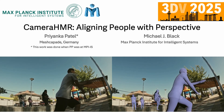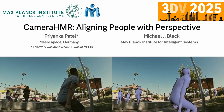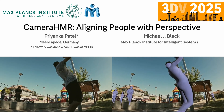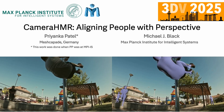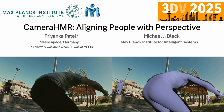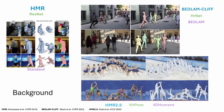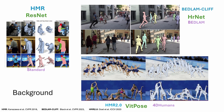We present CameraHMR, a 3D human pose and shape estimation method from monocular images. 3D human pose and shape estimation has advanced rapidly, driven by stronger backbones and more extensive training data.